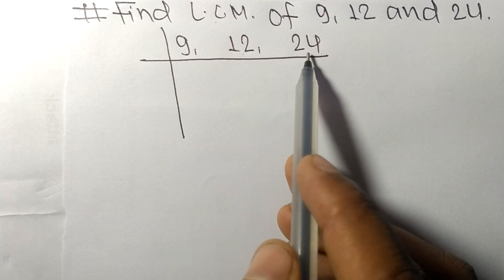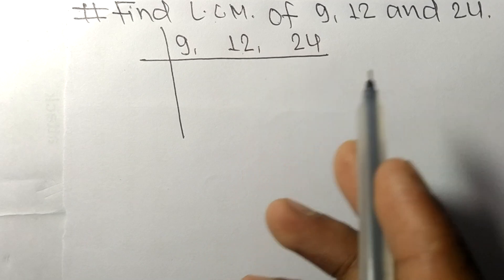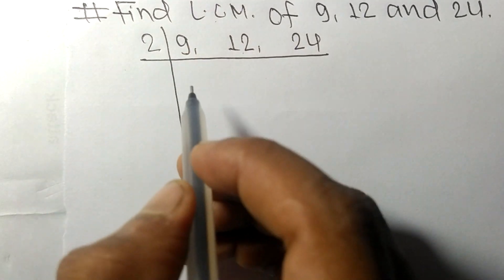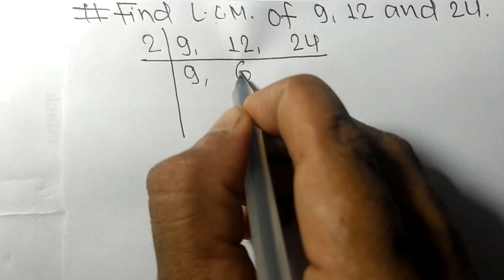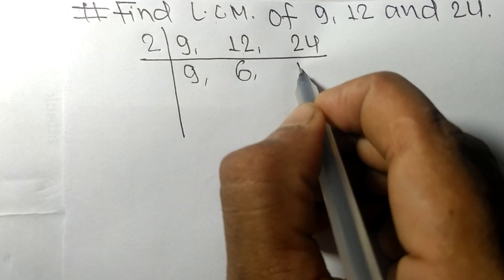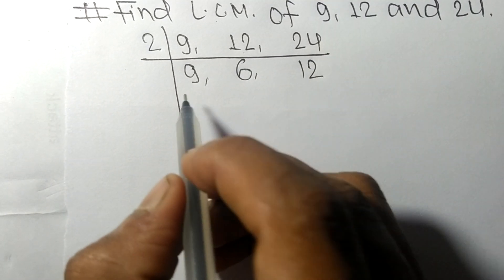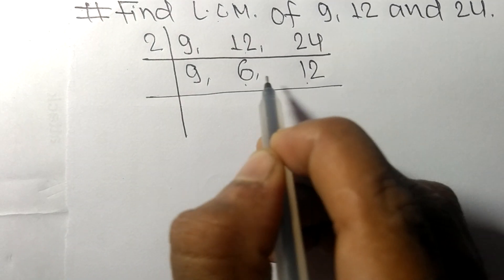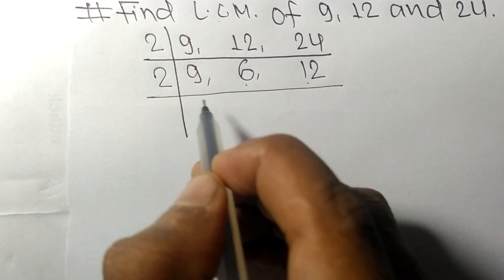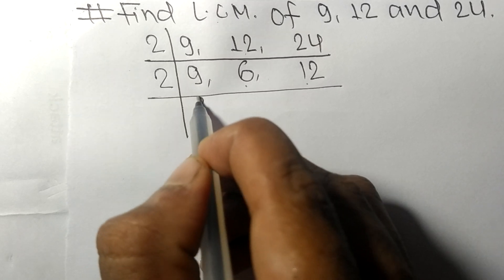12 and 24 are exactly divisible by 2. 9 is not divisible, so it stays the same. 2 times 6 equals 12, 2 times 12 equals 24. Again, 6 and 12 are divisible by 2. 9 is not divisible, so it stays the same.